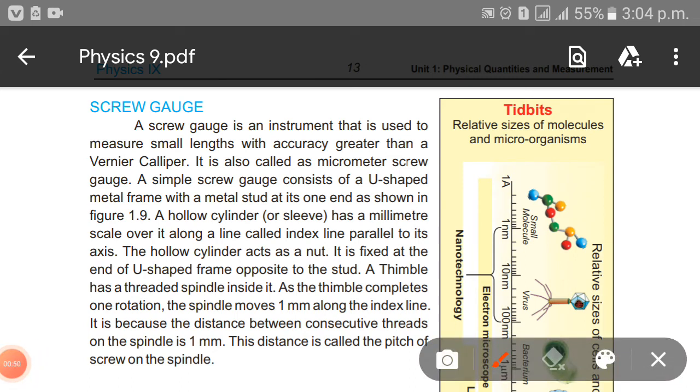A simple screw gauge consists of a U-shaped metal frame with a metal stud at its one end as shown in figure 1.9. A hollow cylinder or sleeve which has a millimeter scale over it along a line called index line parallel to its axis. The hollow cylinder acts as a nut. It is fixed at the end of the U-shaped frame opposite to the end of the stud.